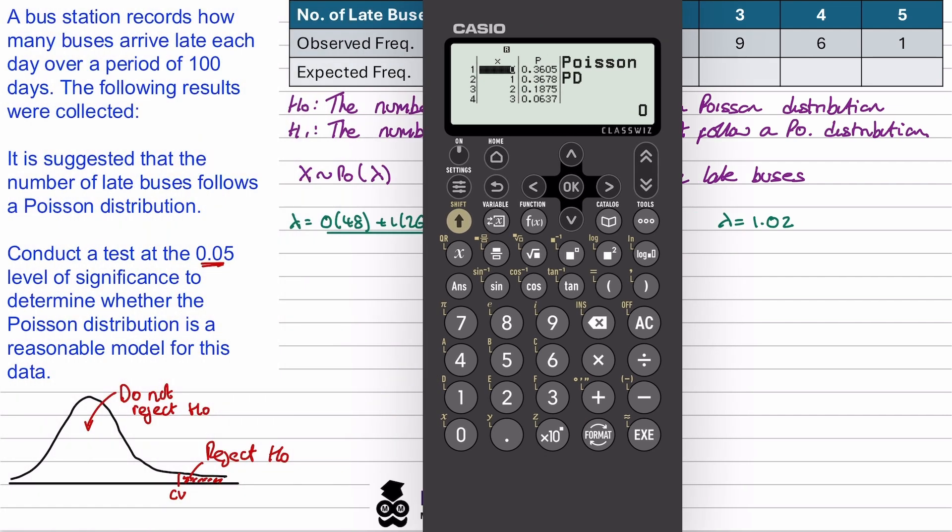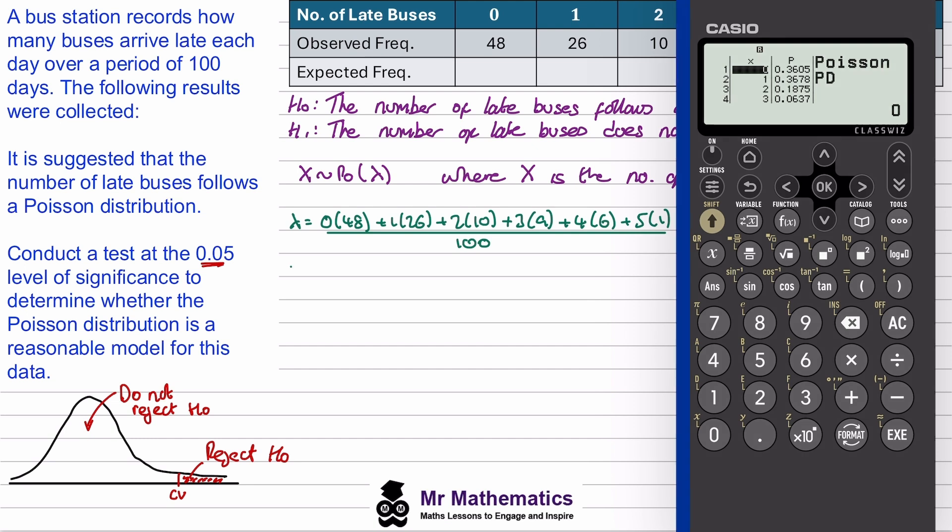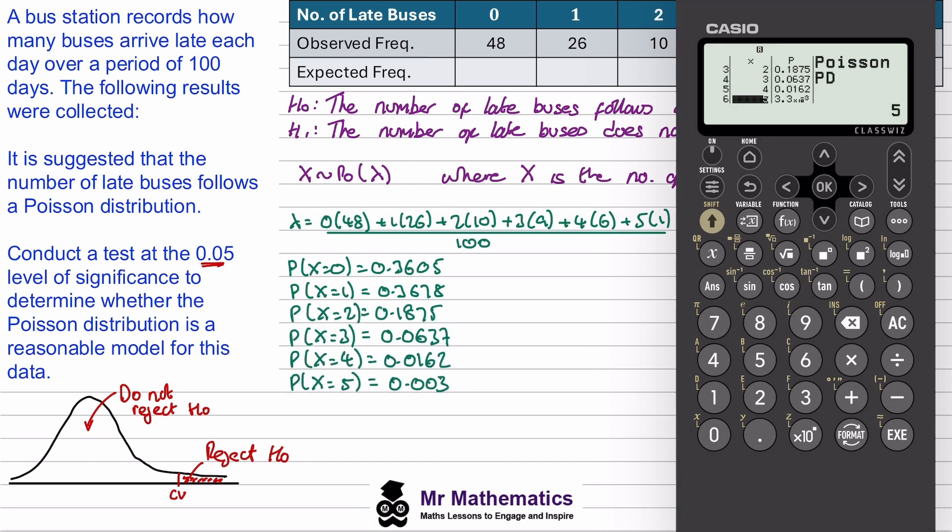I'll just make a note of these. So the probability of x equaling 0 will be 0.3605, the probability of x equaling 1 will be 0.3678 and so on. So in the exam it's a good idea to write down each of these probabilities even though they've been calculated on the calculator.